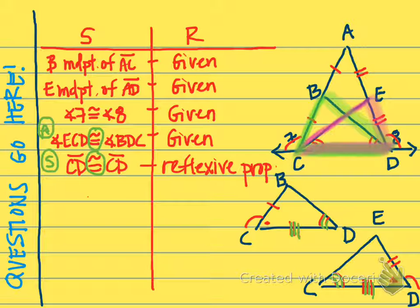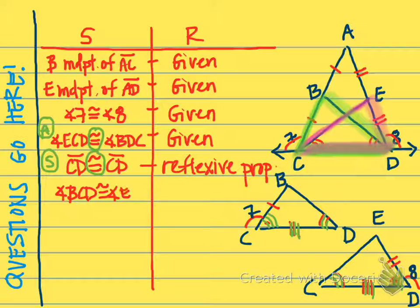Then we also talked about showing that angle BCD is congruent to angle EDC, because they are both supplementary to angles 7 and 8. Remember where angles 7 and 8 were — angle 7 was here, angle 8 was here — and we know from our givens that those are congruent. If those are congruent, then their supplements, which are angles BCD and EDC, are going to be congruent. So we could state that angle BCD is congruent to angle EDC, and that would be my third letter, my A. So I could now state that these two triangles are congruent by ASA.